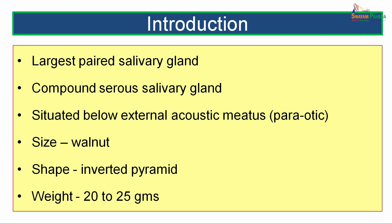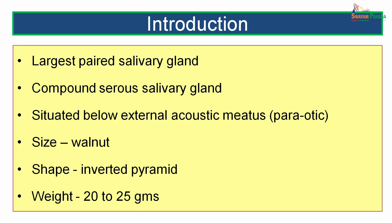Introduction. The parotid gland is the largest paired salivary gland. It is a compound serous type of salivary gland. It is situated below and in front of the external acoustic meatus — 'para-otic,' around the external auditory meatus. It is the size of a walnut. The shape is inverted pyramid shaped, and it weighs about 20 to 25 grams.